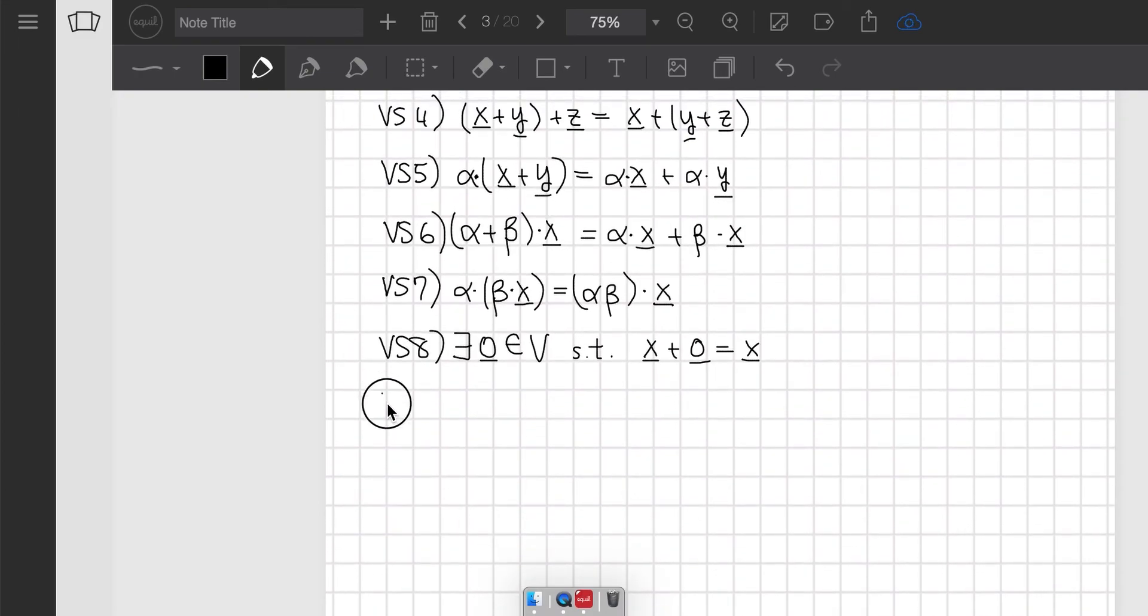Then we have VS9, which states that there must exist the inverse of addition, or the additive inverse of any vector x, and it must belong to V. So there must exist this vector here, negative x, such that if we add it to x, we get the zero vector.